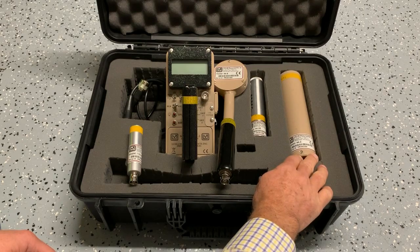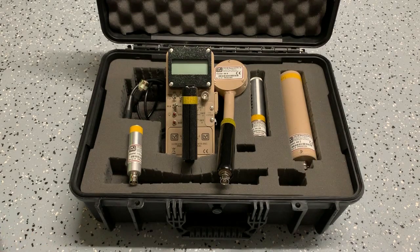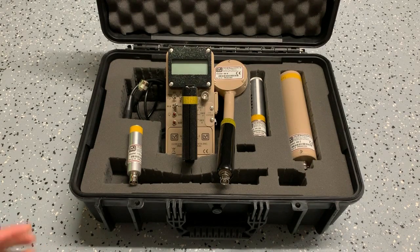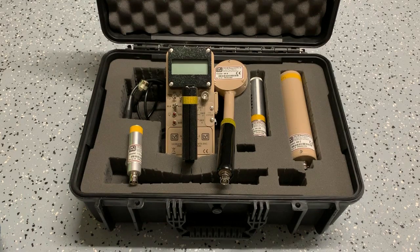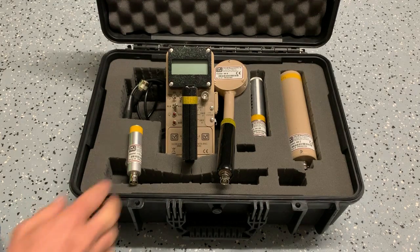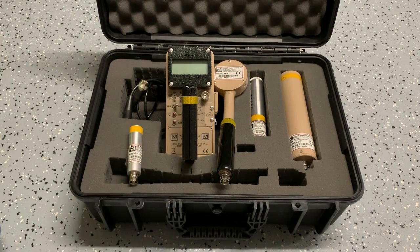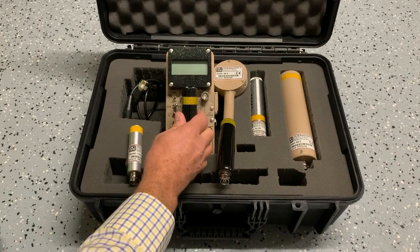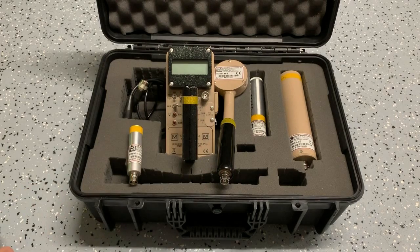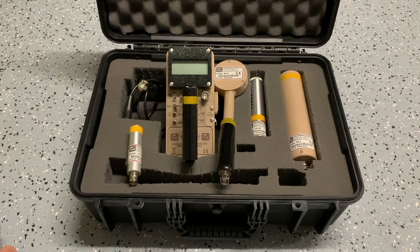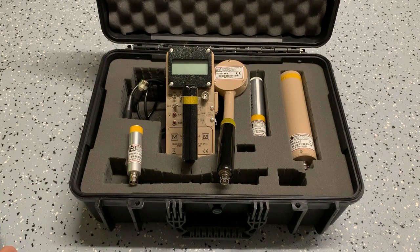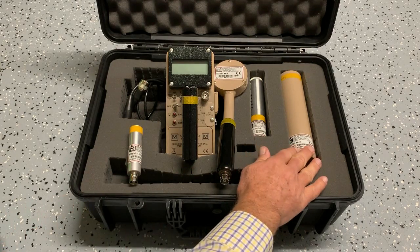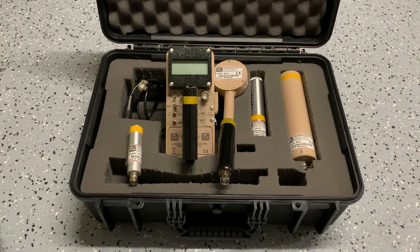But specifically I'm going to be talking about this probe and one of the things that we see with that is that its range is really limited to about 50 mR per hour when hooked to a digital rate meter like this. A lot of people don't realize that because this rate meter is capable of displaying and will auto-range up to 9,999 R per hour. But if I have this probe attached, it's really only good to about 50 mR per hour.